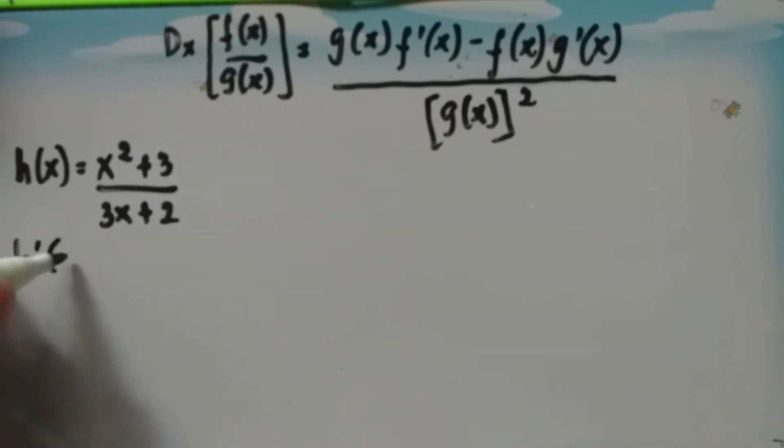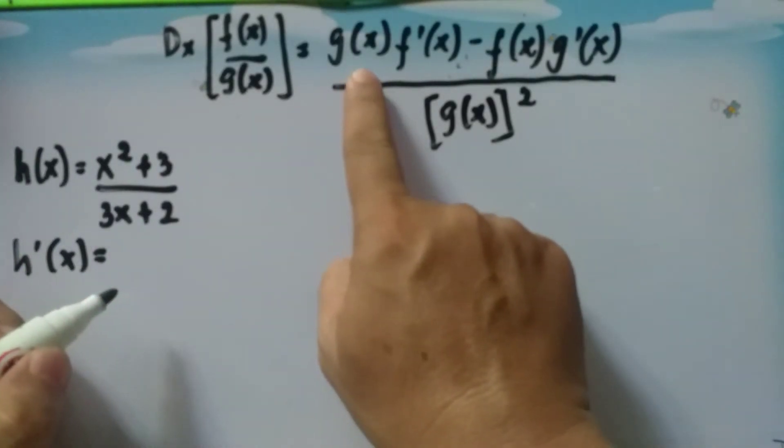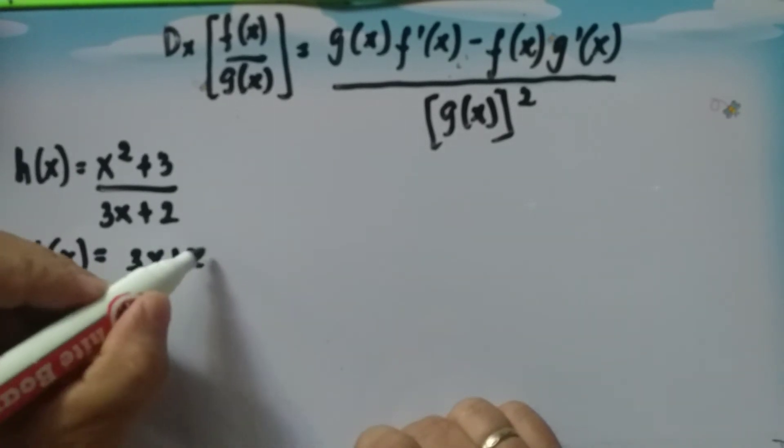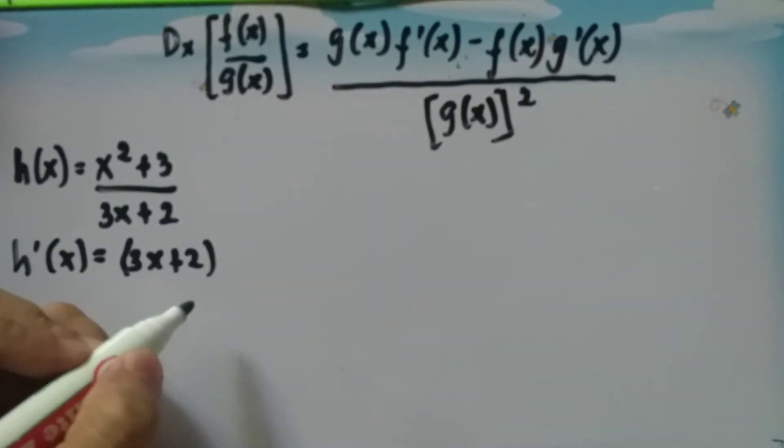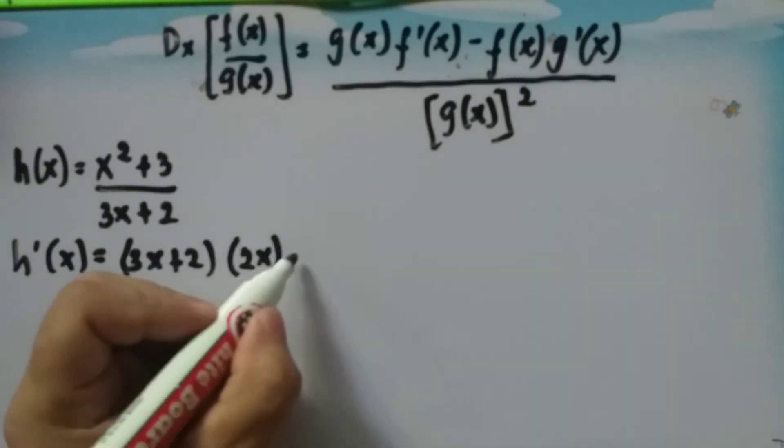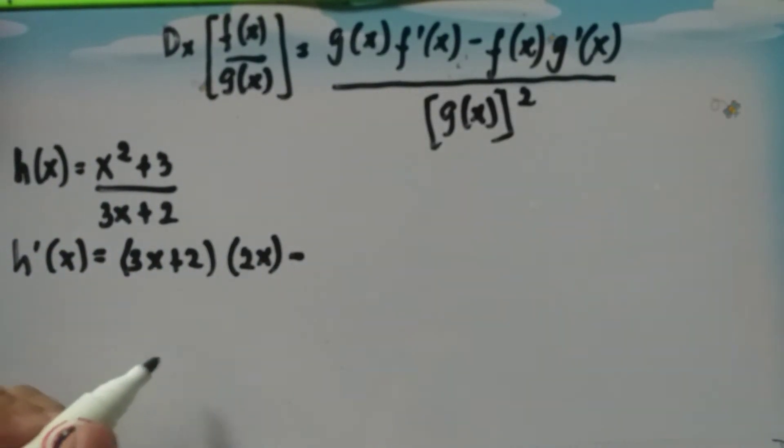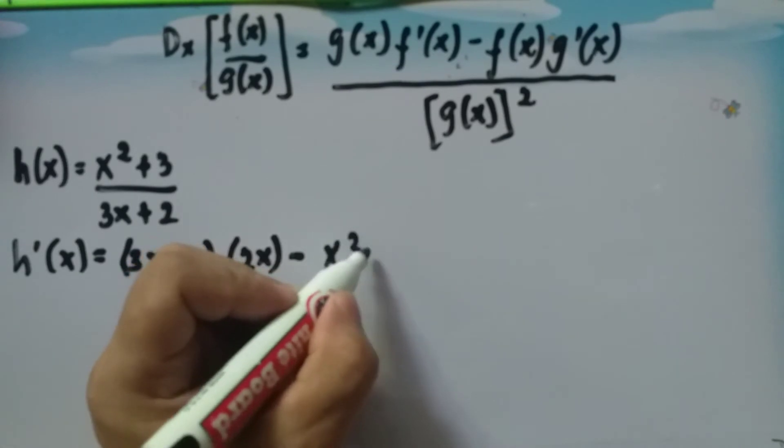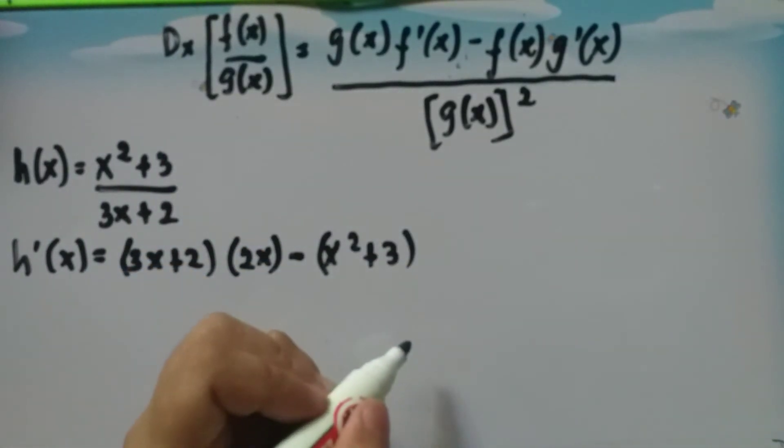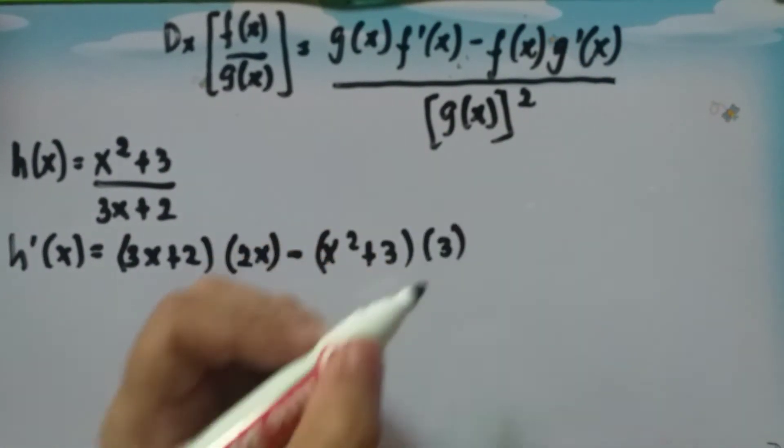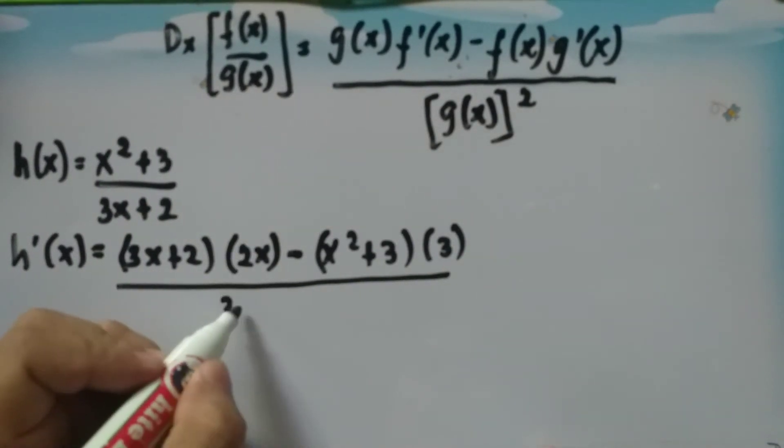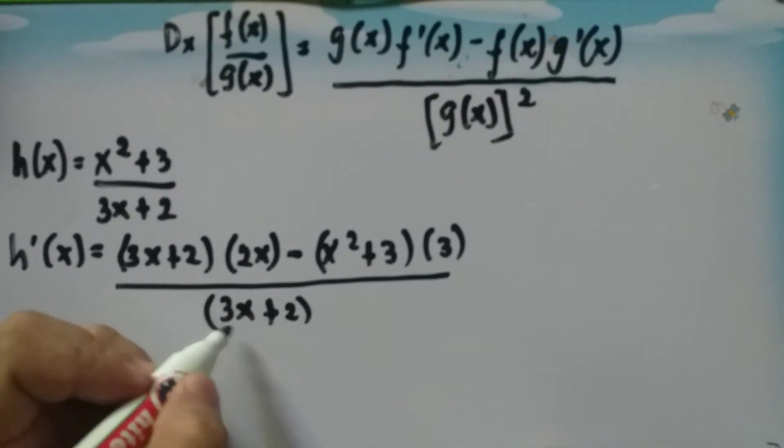So we have h prime of x equals g of x, which is 3x plus 2, times f prime of x. The derivative of f of x is 2x, minus f of x, which is x squared plus 3, times the derivative of g of x, which is 3, all over 3x plus 2 squared.